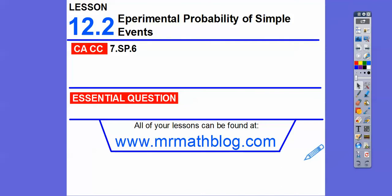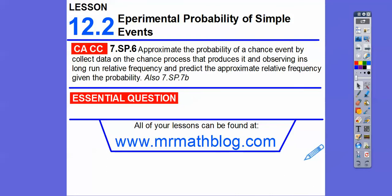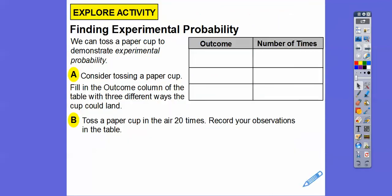Hey folks, this lesson is Experimental Probabilities of Simple Events. Simple events just means one time. Here's our common core strand for our teachers. And our question is how do we find the experimental probability of a simple event?